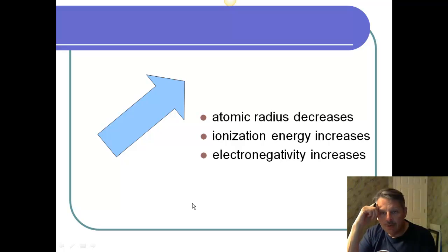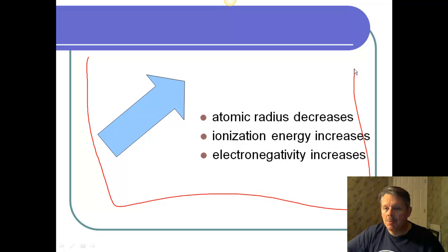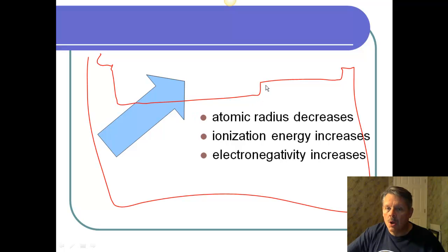Electronegativity increases. So, up here on the right-hand side of my periodic table, if I think of this whole thing as a periodic table, this is my periodic table. Then, as I go up and to the right, the atomic radius is smaller. And it's bigger down here. And everything else is backwards.